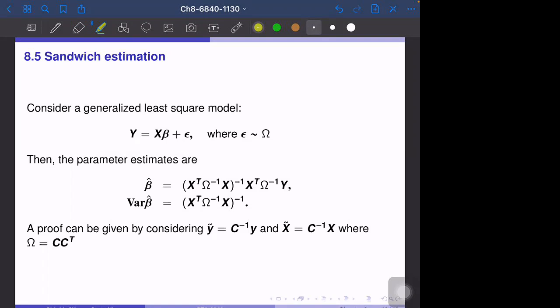Consider a generalized least square model—a linear model but our assumption on epsilon is more general. Originally epsilon follows iid normal error, so the variance of epsilon is sigma square times identity matrix. But here we have a general variance matrix, the n by n matrix omega.